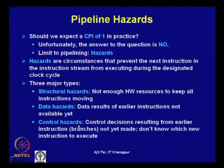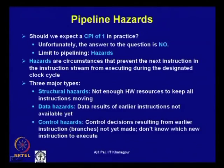The third type is control hazard: control decisions resulting from earlier instructions are not yet made, so we do not know which instruction to execute next. Whenever there is an if-then-else statement, the condition on which branching depends may not yet be known. If the condition is true, one code sequence executes; if not, another. The processor must wait until the decision is known, leading to a control hazard.